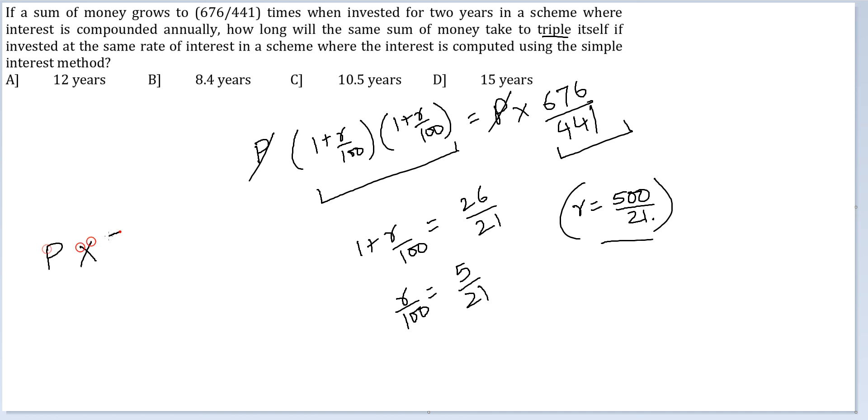So P into 500 by 21 into N divided by 100 has to be equal to 2P. This is what we are seeking. P and P will get cancelled, 100 and 100. So N would be equal to 42 by 5, or N would be equal to 8.4 years. Therefore, your answer to the question will be option B, 8.4 years.